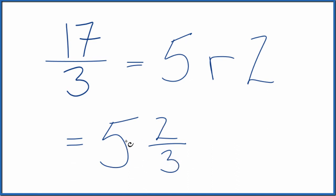And we can check that. 5 times 3 is 15 plus 2. That gives us 17. Bring the denominator across 17 thirds. That's what we started with.